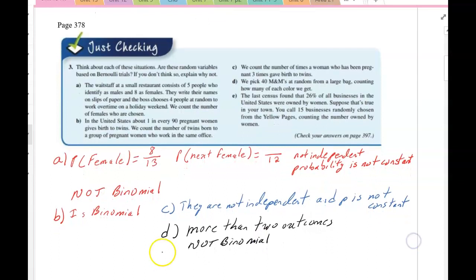And then the last question, letter E. The last census found that 26% of all businesses in the United States were owned by women. Suppose that's true for your town. You call 15 businesses randomly from the yellow pages, counting the number owned by women.